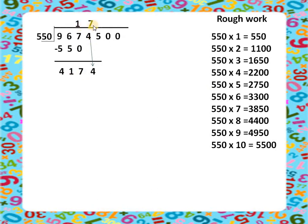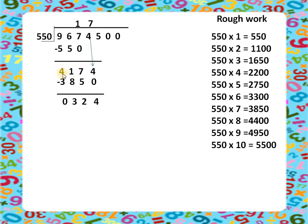Seven times 550 is 3850. We subtract: 4 minus 0 is 4, 7 minus 5 is 2, 11 minus 8 is 3, 4 minus 3 is 0, giving us a remainder of 324. We compare 324 with 550 — it is less, so we bring down another digit.